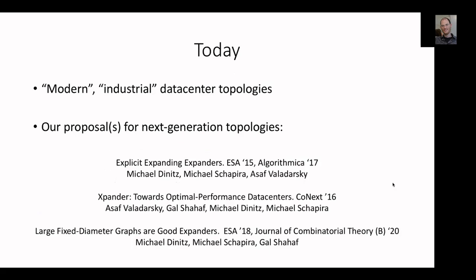I'm going to try to do two things today. First, I'll give an overview of modern and industrial data center topologies. I'm not a networking person — I'm an approximation algorithms and distributed computing person who dabbles in networking. This is my point of view, which may or may not match actual networking people. I'll provide references to the actual networking papers. I'm starting with this because papers at PODC and DISC sometimes make claims about usefulness in data centers — and if you're going to make that claim, you should understand what's going on inside a modern data center.